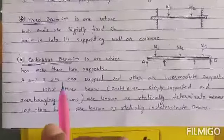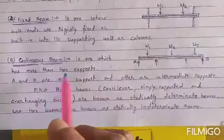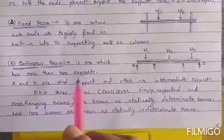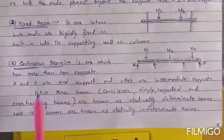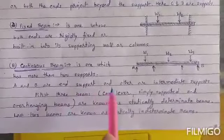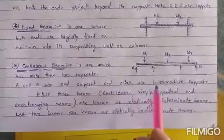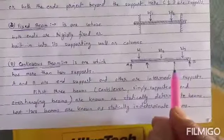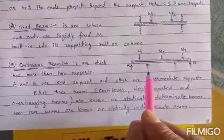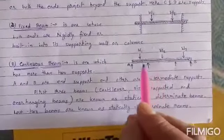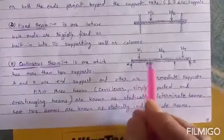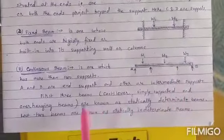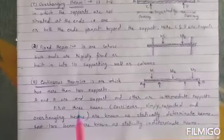Next type is the continuous beam, which is one that has more than two supports. Here A and B are the end supports, and in addition there are some intermediate supports as well. Loads W1, W2, and W3 are applied perpendicular to the axis.